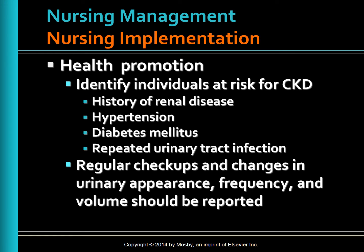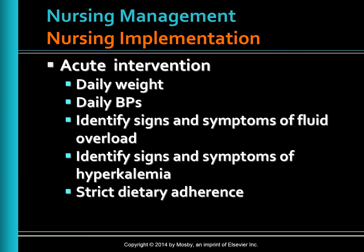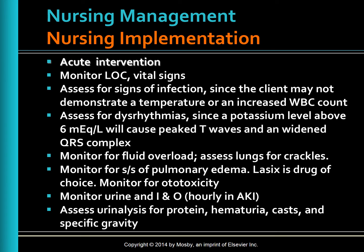Individuals identified as at risk need to take measures to prevent or delay the progression of CKD and, more importantly, reduce the risk of cardiovascular disease. These include glycemic control for patients with diabetes, optimizing blood pressure control, and lifestyle modifications including smoking cessation. Regular checkups should occur when there are changes in urinary appearance, frequency, or volume. Acute interventions include daily weights, daily blood pressure, and identifying signs and symptoms of fluid overload and hyperkalemia. A potassium level above 6 mEq/L will cause peaked T-waves and widened QRS complex.